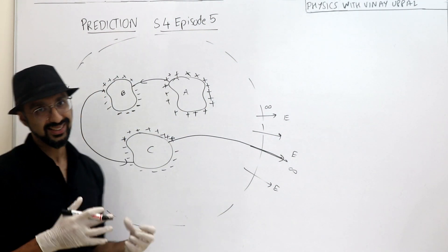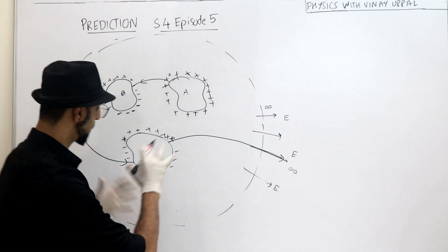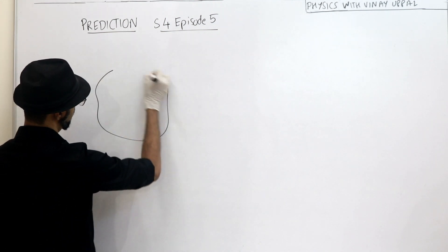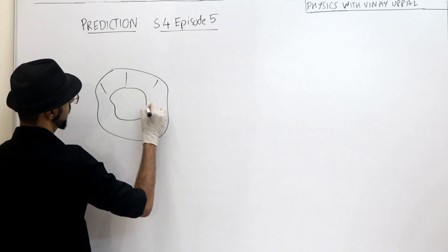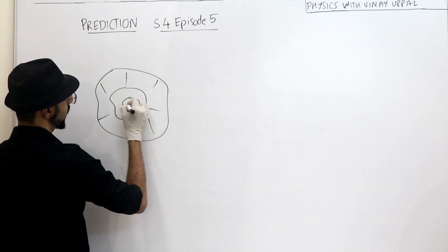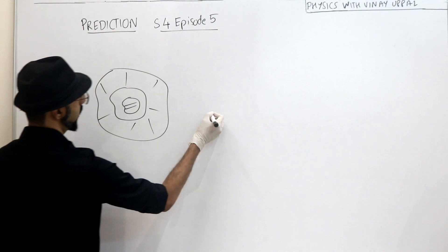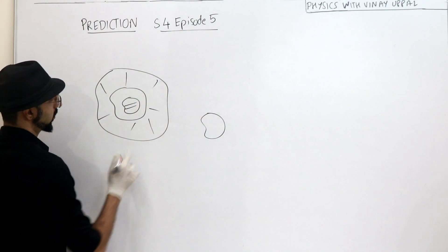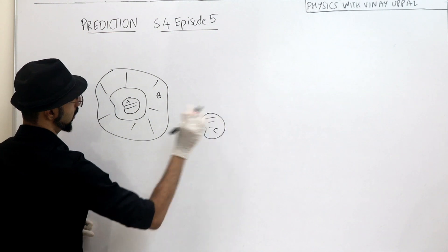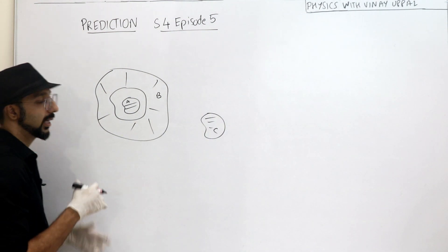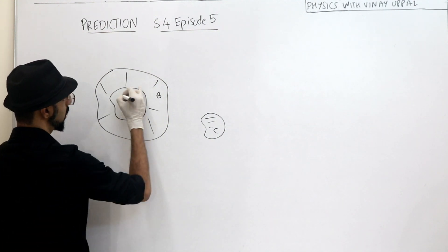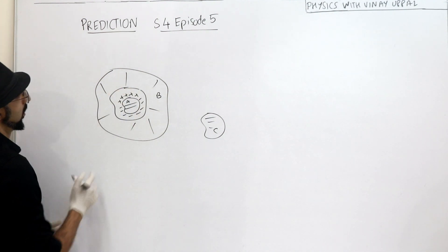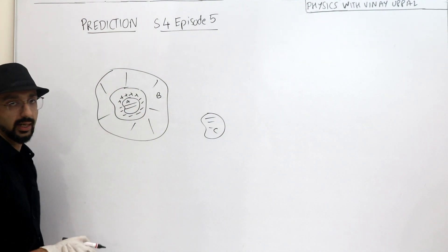Now let's also look at what if the conductors have cavities — that case can also be examined. Let's look at the situation. There is no external charge; this is the only system we have. Let's call this conductor A, conductor B, and conductor C. Let's check whether we can have both positive and negative surface charge density.